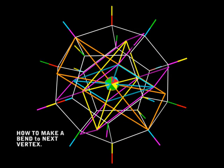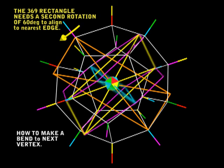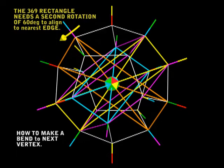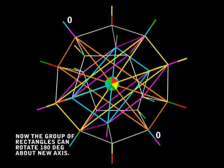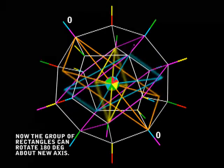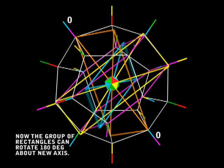Now the 369 rectangle needs to be rotated in another axis. I'll show this axis with a yellow arrow. The 369 rectangle has got to be rotated 60 degrees to the nearest vector, which is the red and green vector. So now we have a new zero axis, and the group of three rectangles can rotate at 120 degrees again around the new axis.